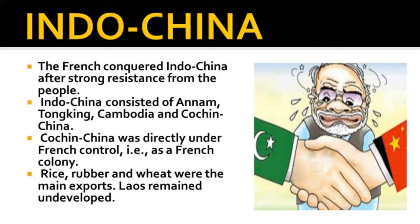Indochina: The French conquered Indochina after strong resistance from the people. Starting in 1858, they brought the Indochinese Union under their control by 1887. Indochina consisted of Annam, Tonking, Cambodia, and Cochin China. Laos was added six years later. Of them, only Cochin China was directly under French control as a French colony; the remaining four were protectorates where local rulers remained but governed under the instruction of French residents. Hanoi was the capital of the French government. Rice, rubber and wheat were the main exports. Laos remained undeveloped.